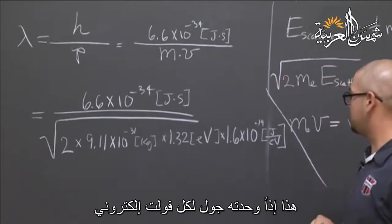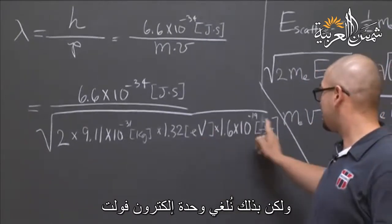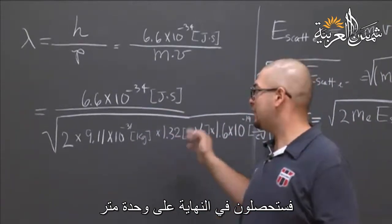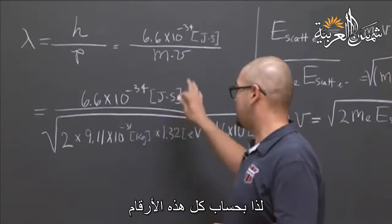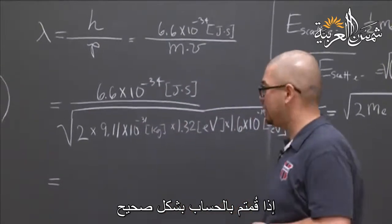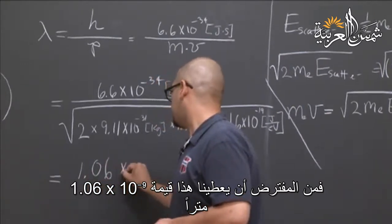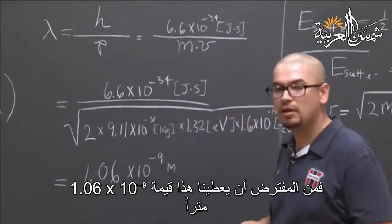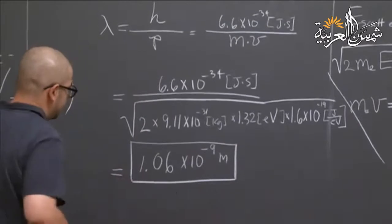Going through the math, joules is just kilogram meter squared per second squared, so all the units factor out and you end up with meters. The result is 1.06 times 10 to the minus 9 meters. This is the value that will get you the right answer on the exam — this is lambda for your de Broglie wavelength.